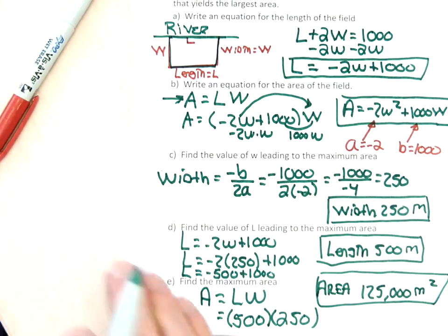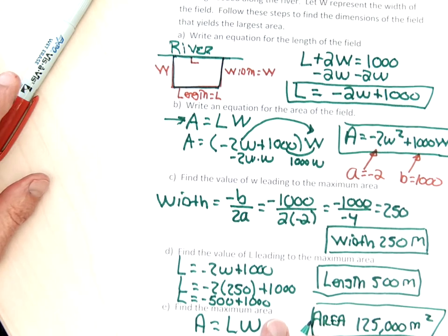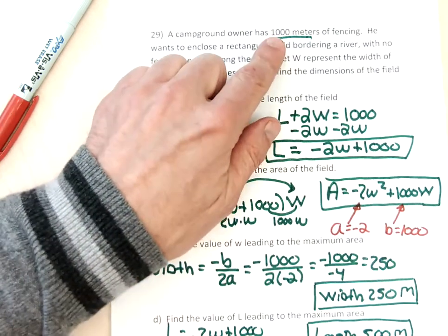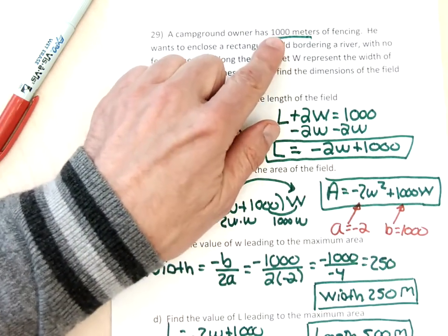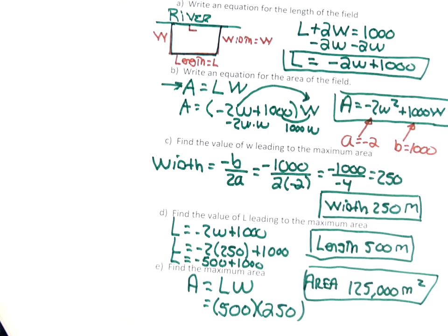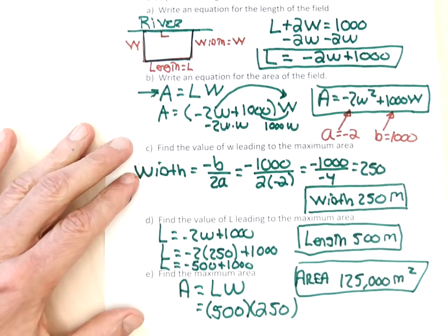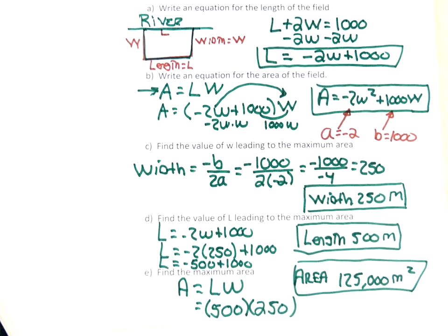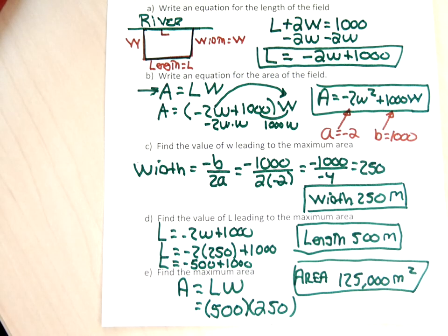The word problem on the test will be exactly this problem, except the thousand meters will be changed to a different amount of fencing. That was hyper-fast, but we'll have plenty of time in class to work through another problem like this. I'm going to pause the video here and make this a 12-minute review.